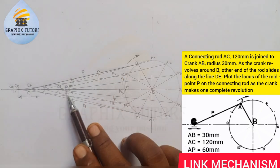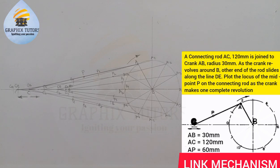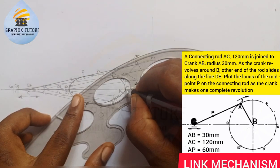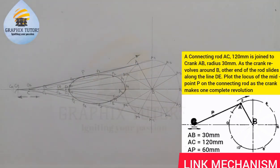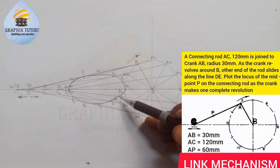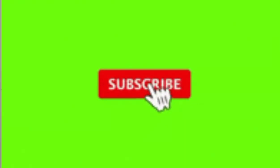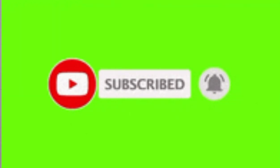Now I join all these points using my French curve to form a smooth locus. The midpoint of A5 is just at this point here. This is the locus of P. If you found this video helpful, please don't forget to like, subscribe, and share the video. Thanks for watching.